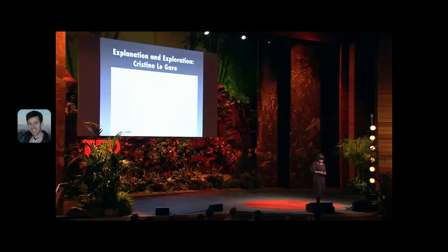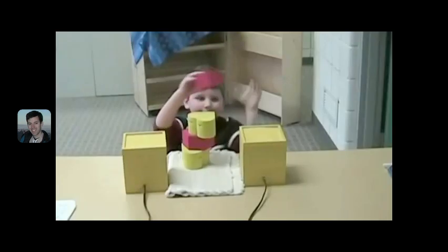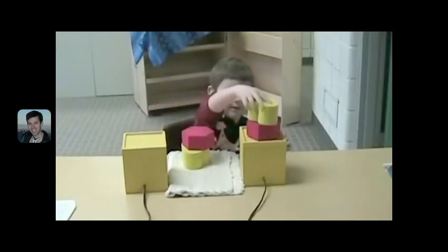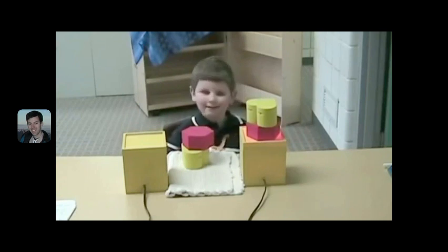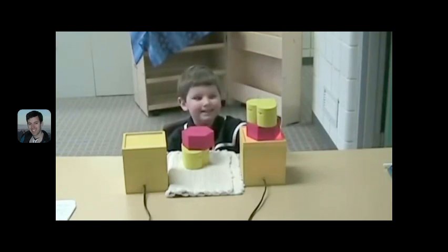Here's one from Christine Laguerre's lab. What Christine did was use blicket detectors. She showed children that yellow ones made it go and red ones didn't. Then she showed them an anomaly. What you'll see is that this little boy will go through five hypotheses in the space of two minutes.